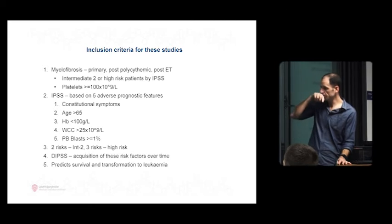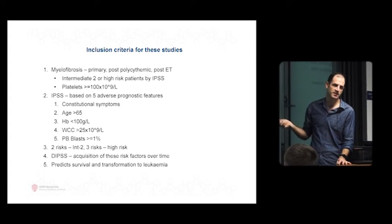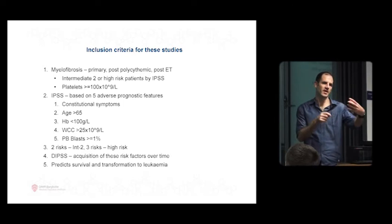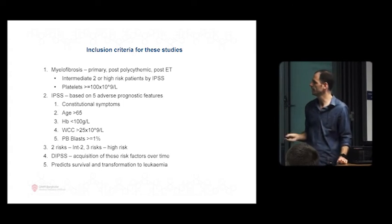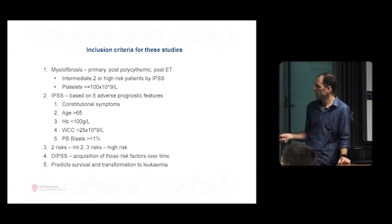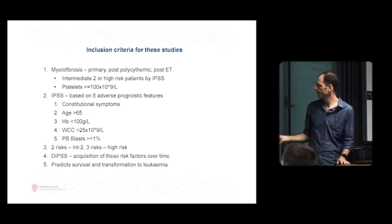The inclusion criteria are those patients with high-risk myelofibrosis. If you're a hematologist, you recognize these criteria because this is the criteria by which the government funds the drug now. You have to have high-risk disease, that means two or more of these: age greater than 65, anemia, very high white cell count, very high immature blood cells in the peripheral blood, lots of symptoms. If you had two or more of these, you could go into the trial, and that would put you at intermediate-2 or high risk. They chose this stratification because this has been shown to predict patients likely to go on and run into trouble with either leukemia or overall survival.